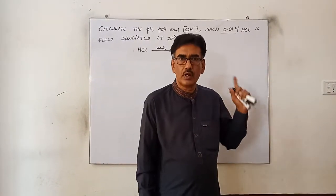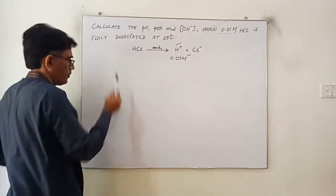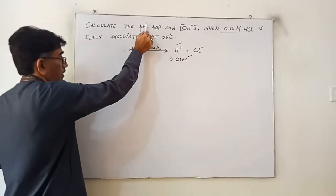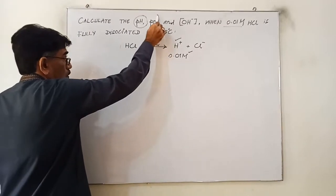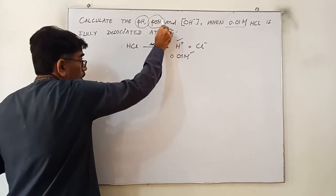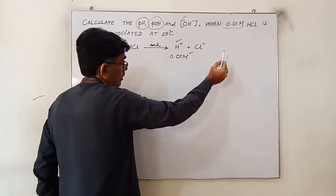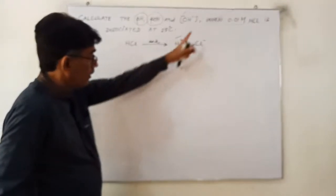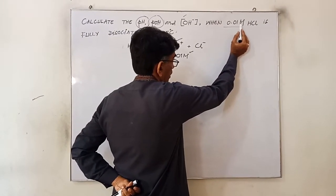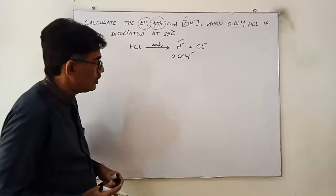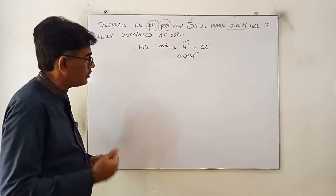As what is written on the board — look at the board — calculate the pH. First, we have to determine the pH. After that determination, you have another aspect called pOH. And the third one is called hydroxide ion concentration. And what you are given? Look at the board — you are given 0.01 molar hydrochloric acid.